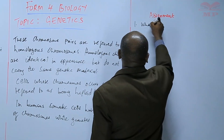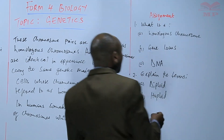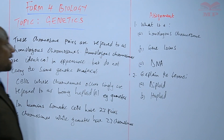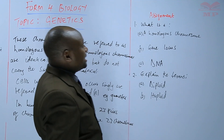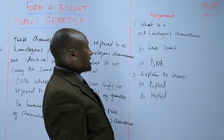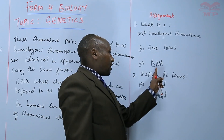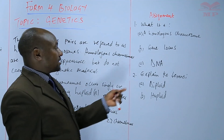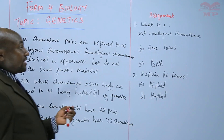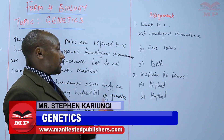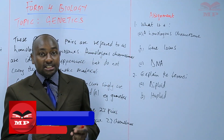For your assignment: define (a) a homologous chromosome, (b) gene locus, and (c) DNA — and for DNA, go ahead and tell us what DNA is made of or what it contains. Also explain the terms diploid and haploid. We'll stop there until next time.